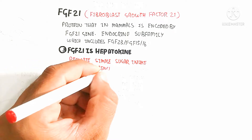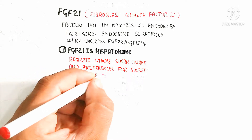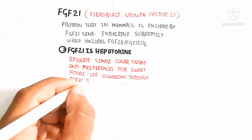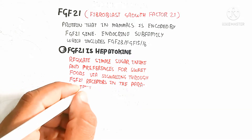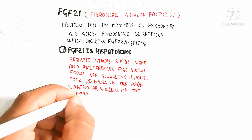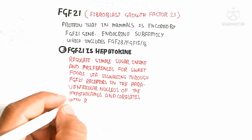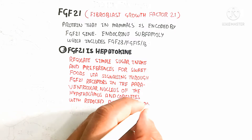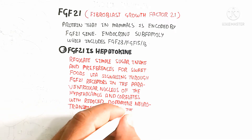FGF21 is endocrine and regulates simple sugar intake and preferences for sweet foods. We signal through FGF21 receptors in the paraventricular nucleus of the hypothalamus, and this correlates with reduced dopamine neurotransmission within the nucleus accumbens.